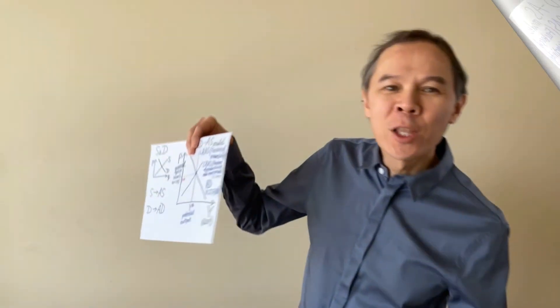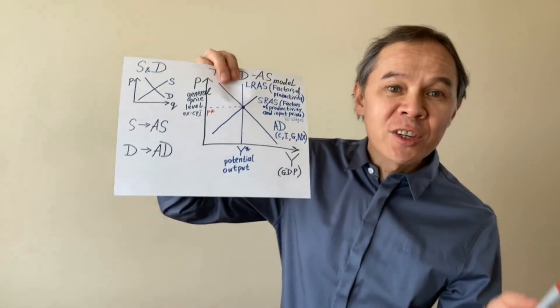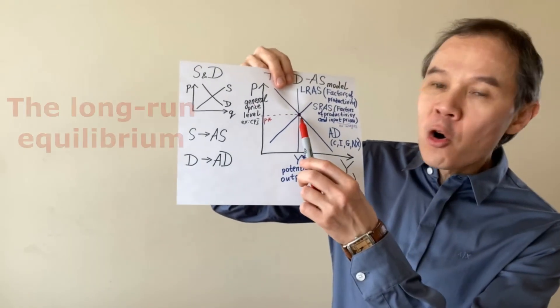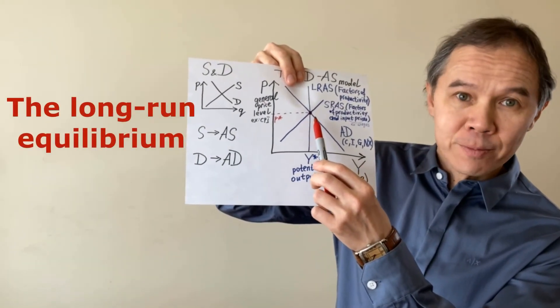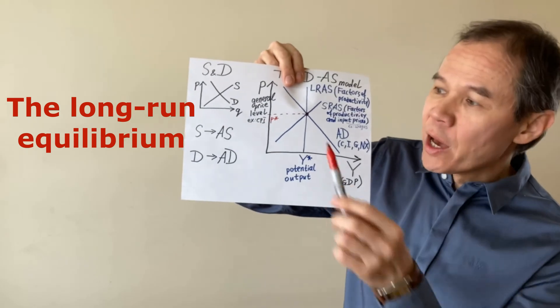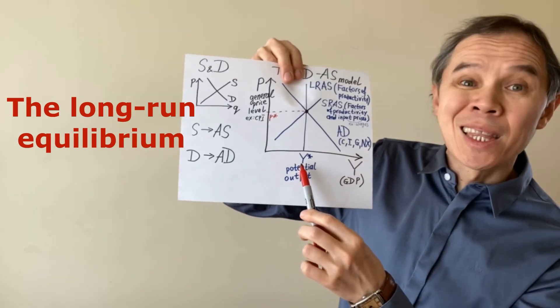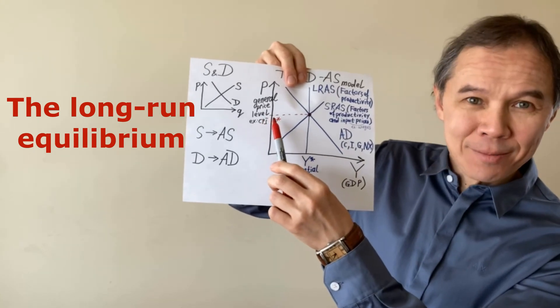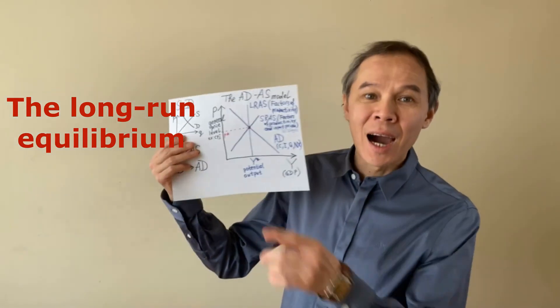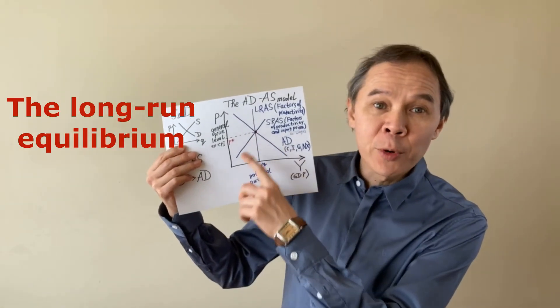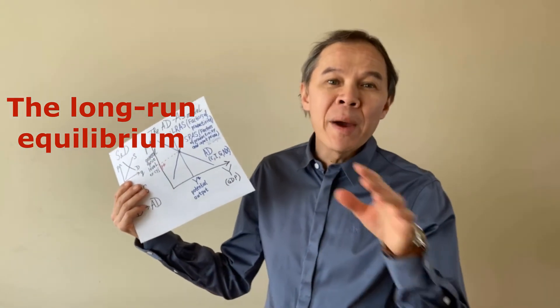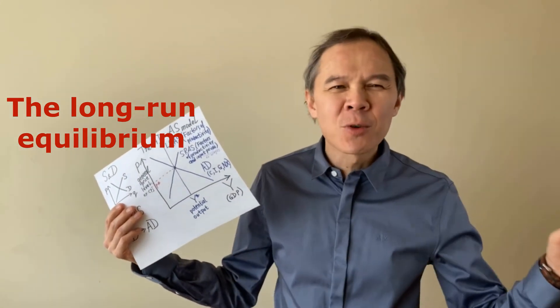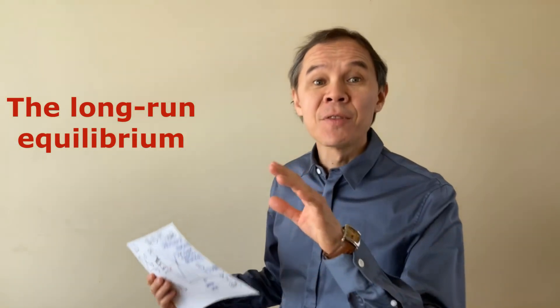And when all curves intersect each other, that intersection is called the long-run equilibrium. At the long-run equilibrium, the economy produces its potential output at the equilibrium price level. If nothing happens, an economy will stay in long-run equilibrium for years, for many years, for thousands of years. Again, if nothing happens.